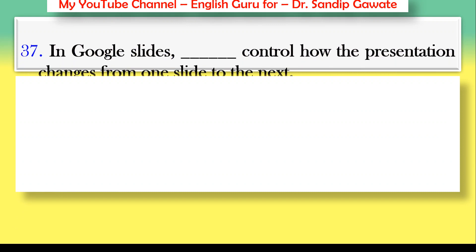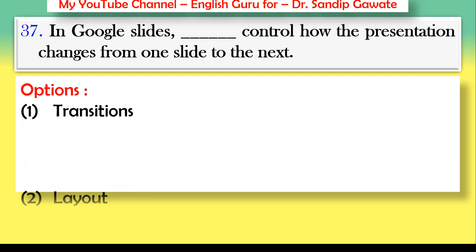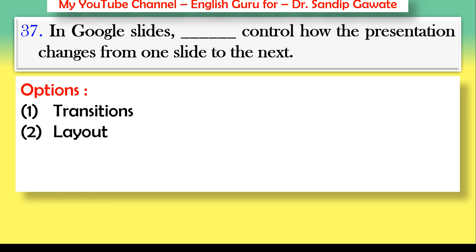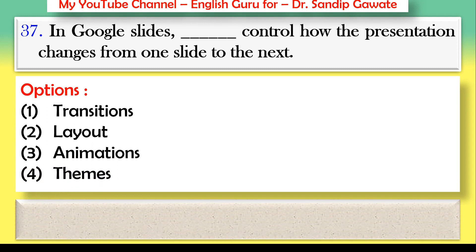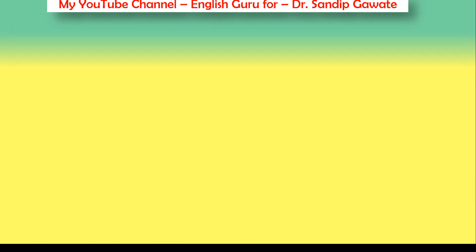Question 37: In Google Slides, what controls how the presentation changes from one slide to the next? Options: transitions, layout, animations, or themes. The correct answer is option number one — transitions control how the presentation changes from one slide to the next.